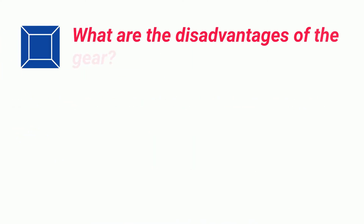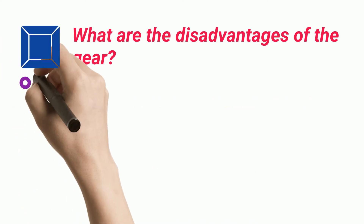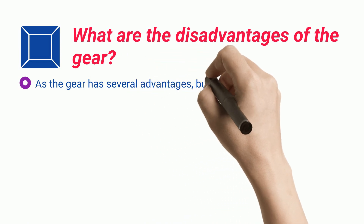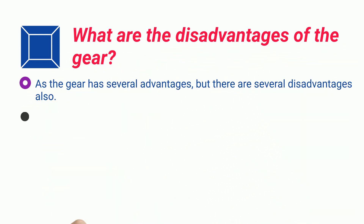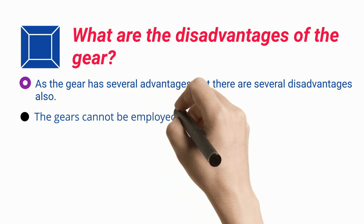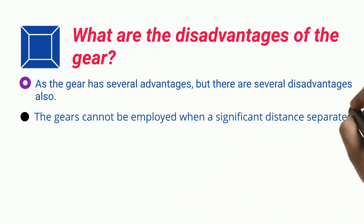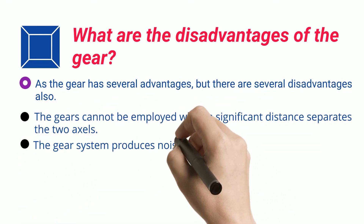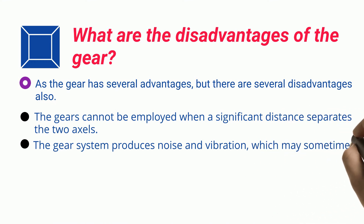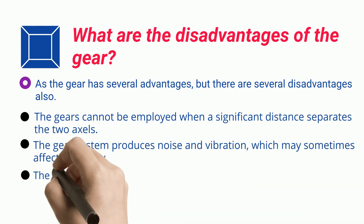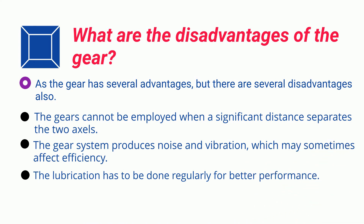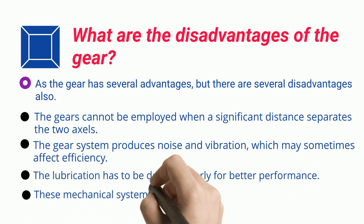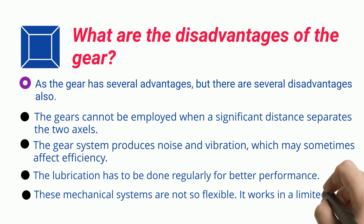What are the disadvantages of gear? Although the gear has several advantages, there are also several disadvantages. Gears cannot be employed when a significant distance separates the two axles. The gear system produces noise and vibration, which may sometimes affect efficiency. Lubrication has to be done regularly for better performance. These mechanical systems are not flexible and work only in a limited area.